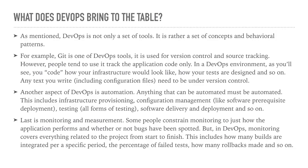Second is automation. Anything that can be automated must be automated. This includes infrastructure provisioning, configuration management like software prerequisite deployment, and all forms of testing — unit testing, functional testing, integration testing, and user acceptance testing. Also software delivery and deployment. There are excellent tools that can help you do all that easily and efficiently. DevOps has tools that will help you provision infrastructure, manage prerequisites, perform different types of testing, and even deliver software to testing environments and deploy to live environments automatically.